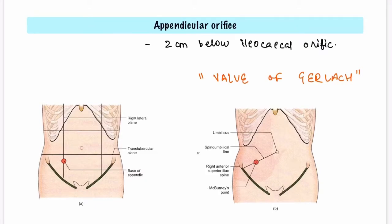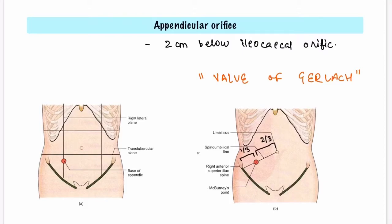Whenever a person is suffering from acute appendicitis, the McBurney's point is the point of maximum tenderness — touching the patient on this point will elicit pain. The position of the McBurney's point is often asked in viva questions. It lies at the junction of the lateral one-third and medial two-thirds of the line joining the right anterior superior iliac spine and the umbilicus.